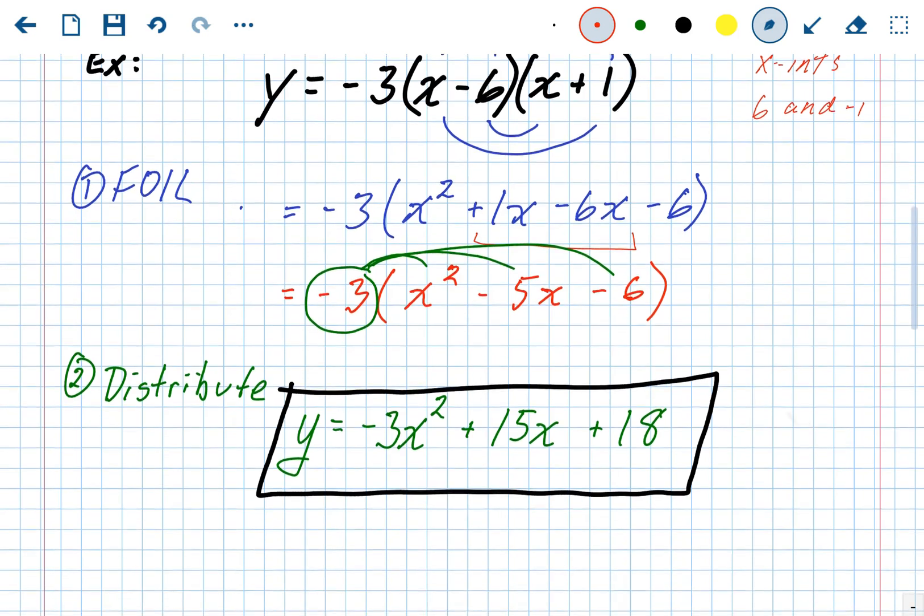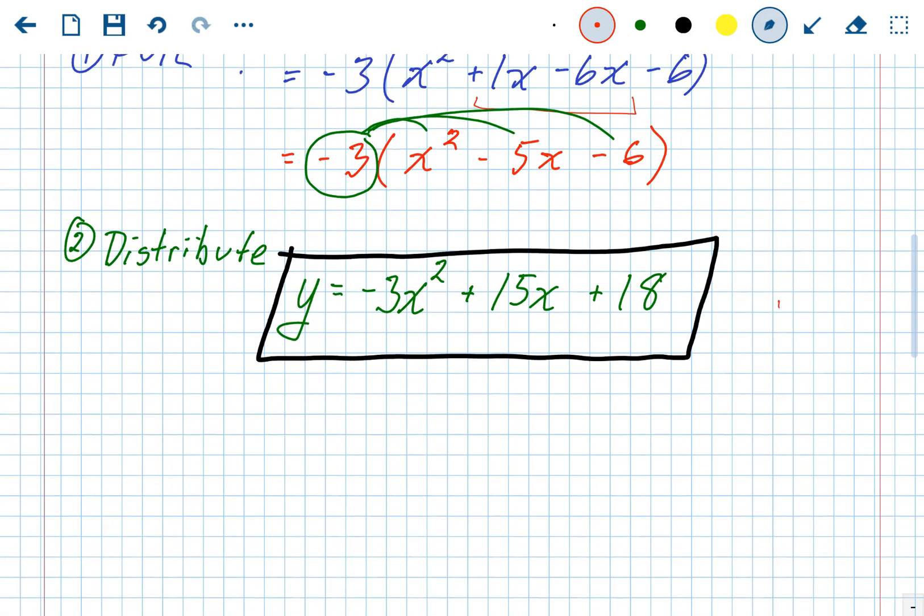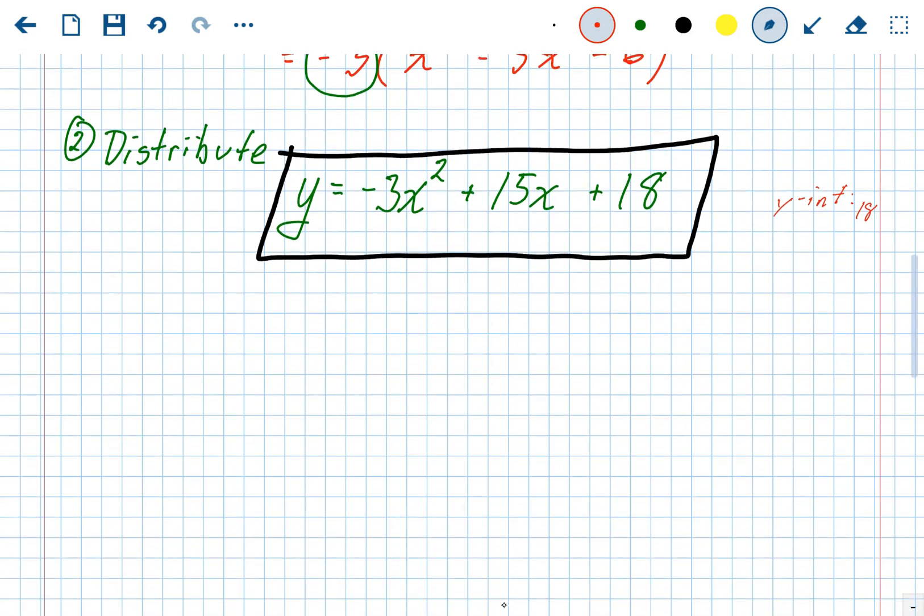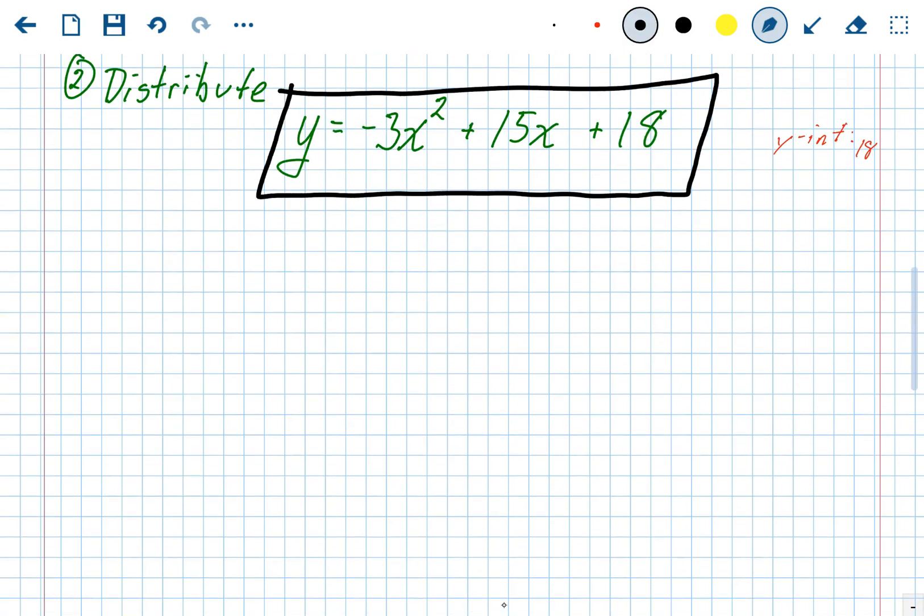Now again, standard form. Standard form, you could find the Y intercept right away. The Y intercept is always the C value. So in this problem, the Y intercept is 18. So just going through these problems and finding, you know, getting the information that you can is always a good practice. All right, let's do one more. If you think you're comfortable, you can skip it.